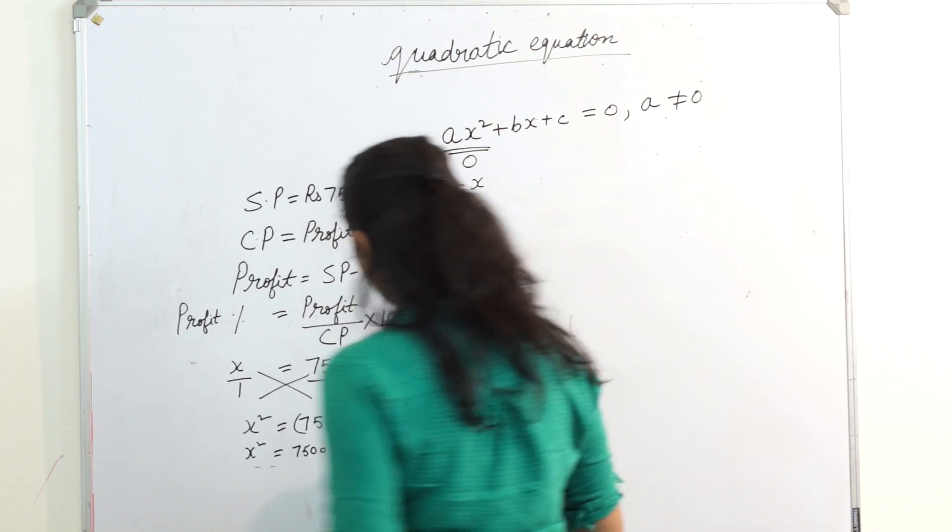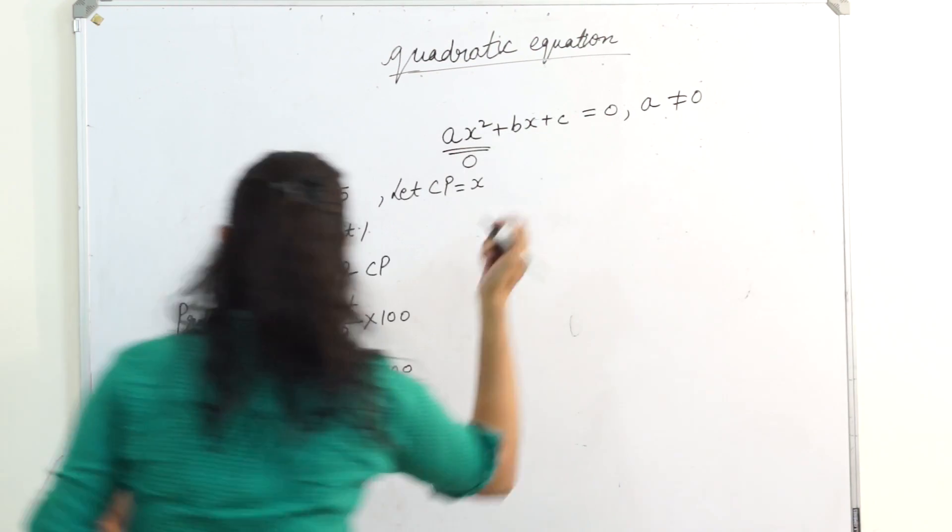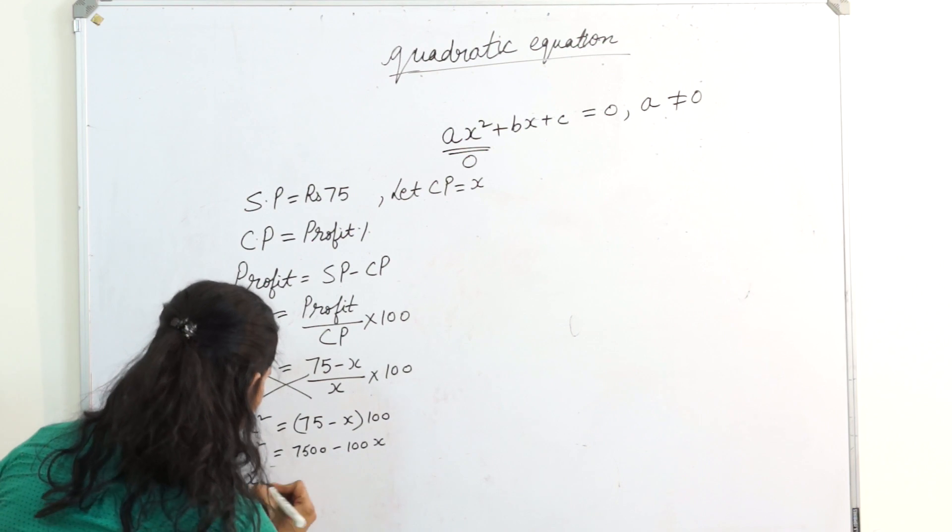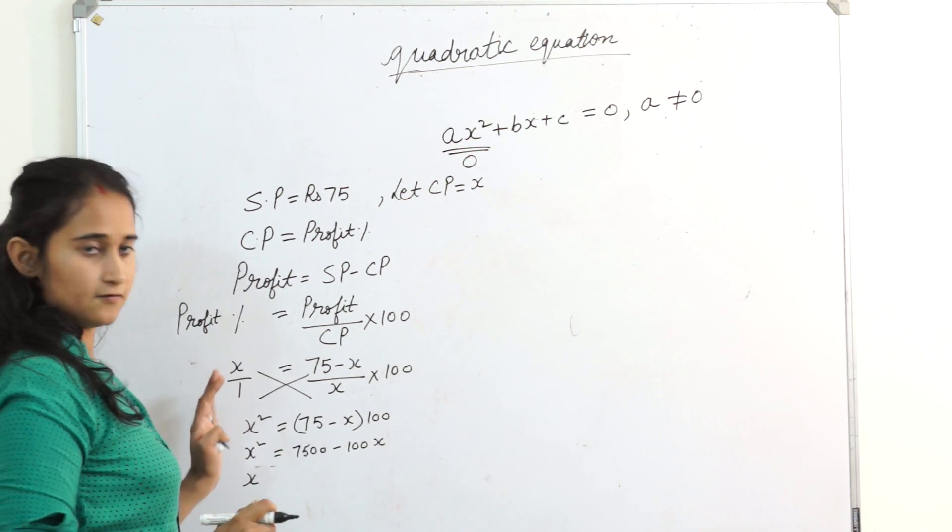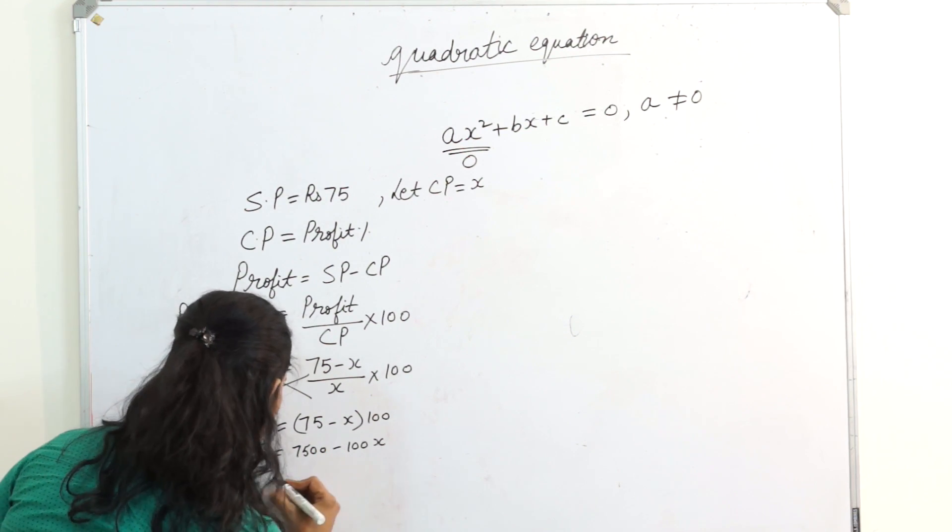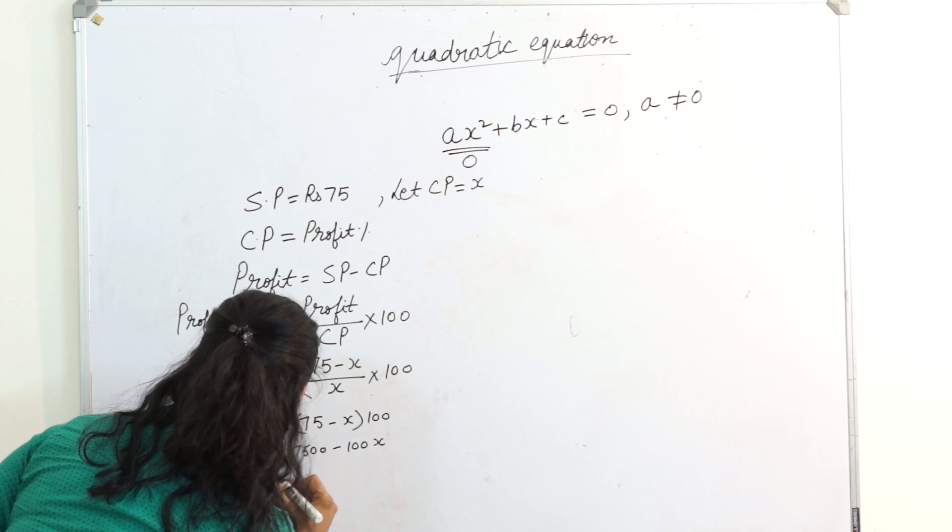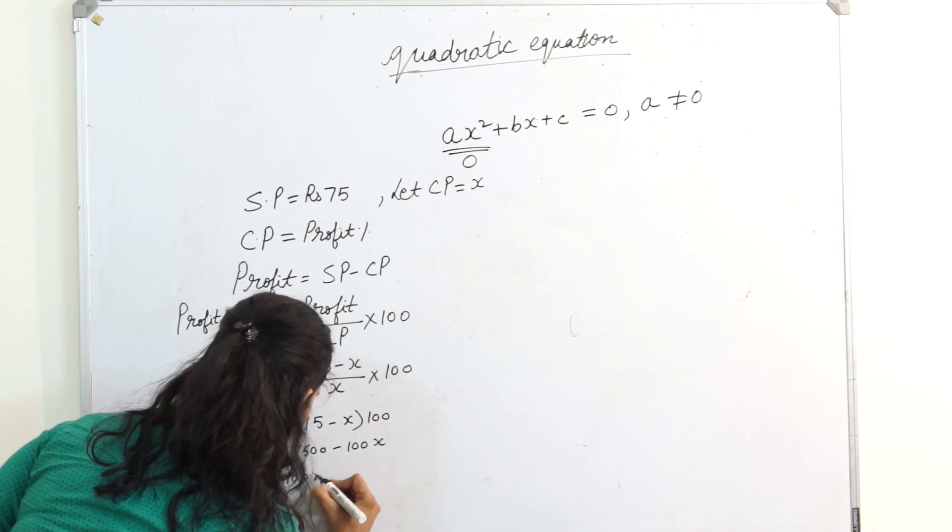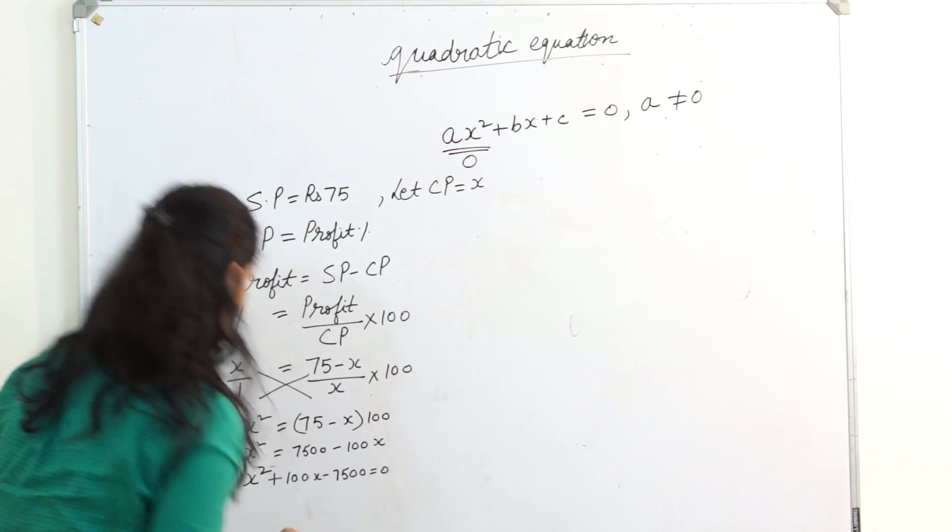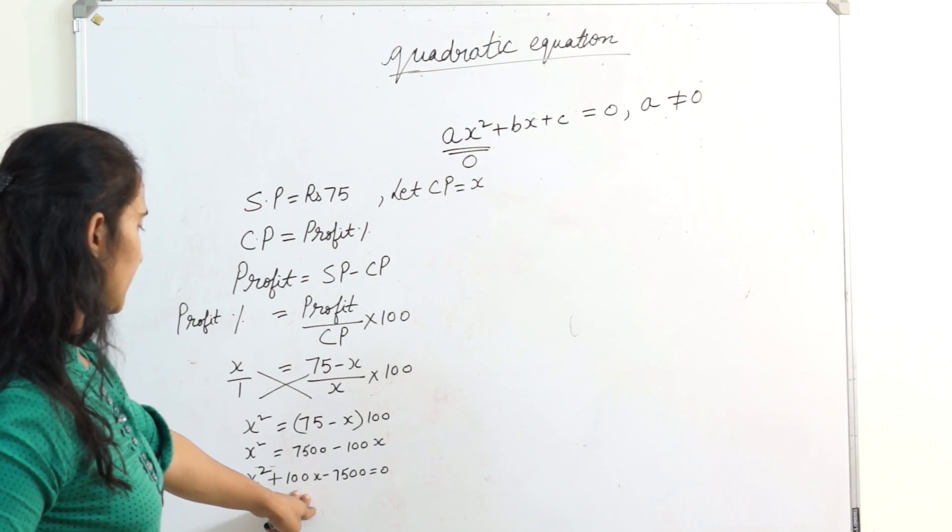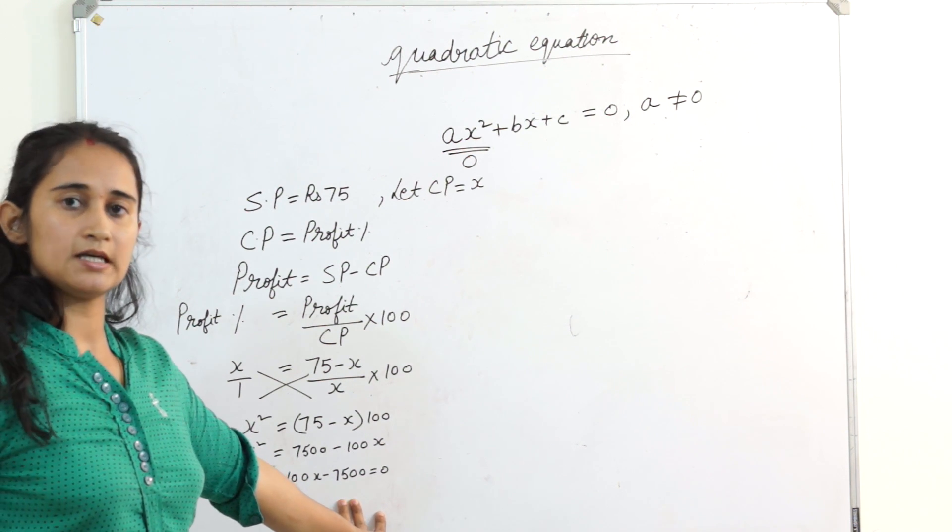So children, can you relate something? Let's see. Take these terms on the right hand side to the left hand side. So x square, this is negative, so it will become positive on the other side. x square plus 100x minus 7500 equals 0.